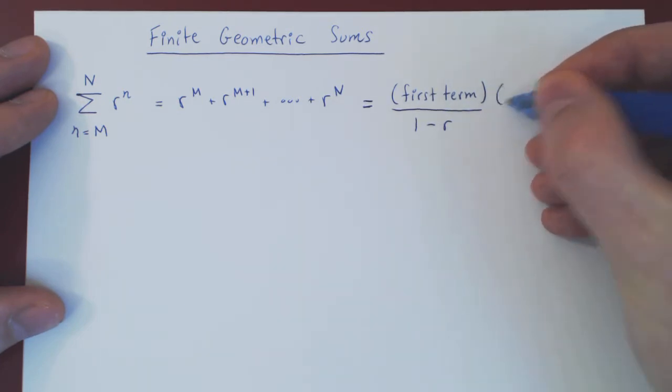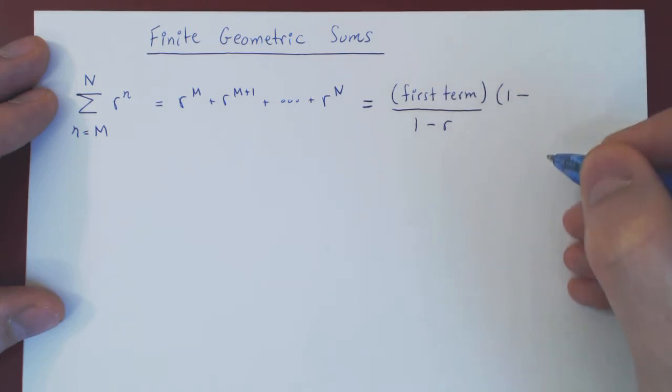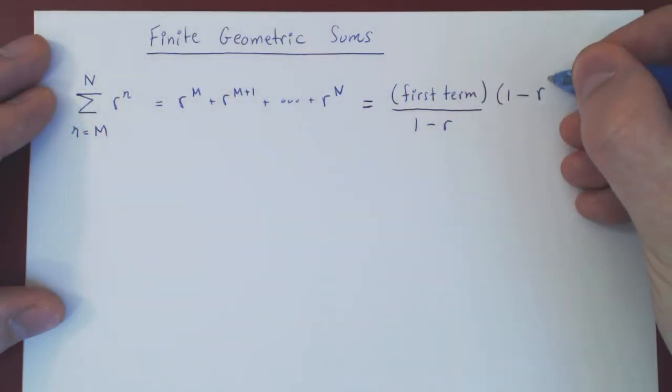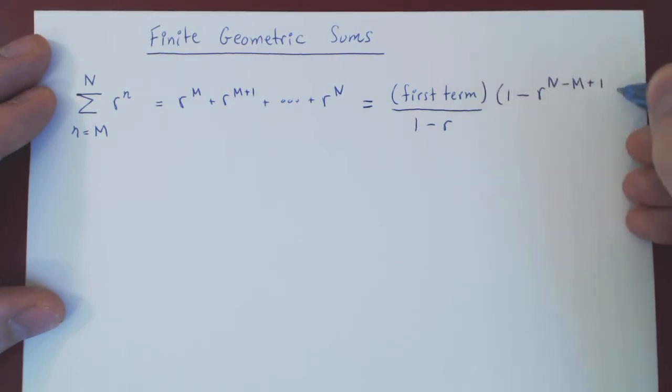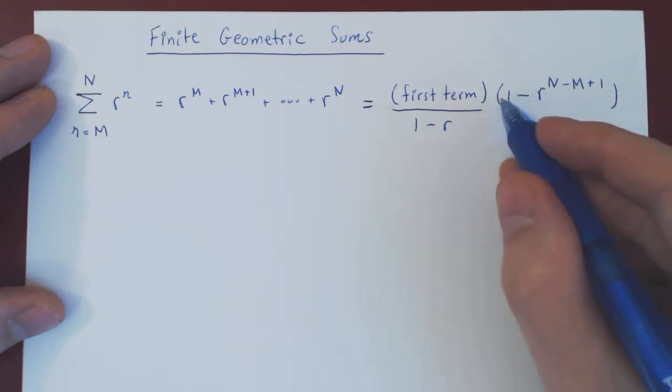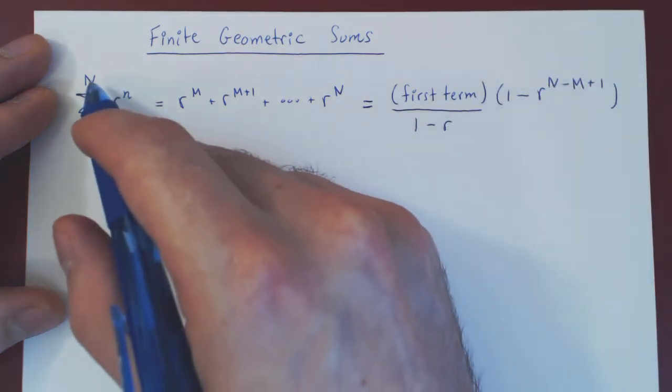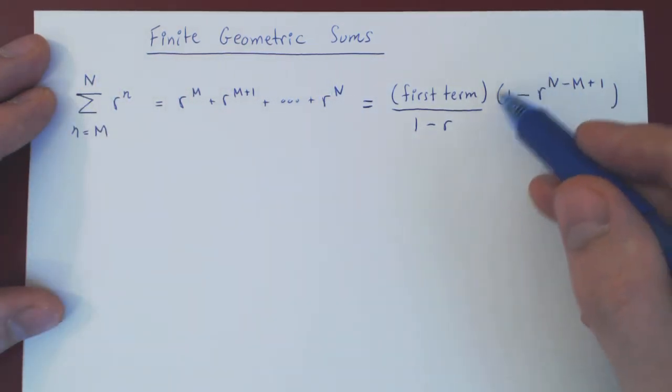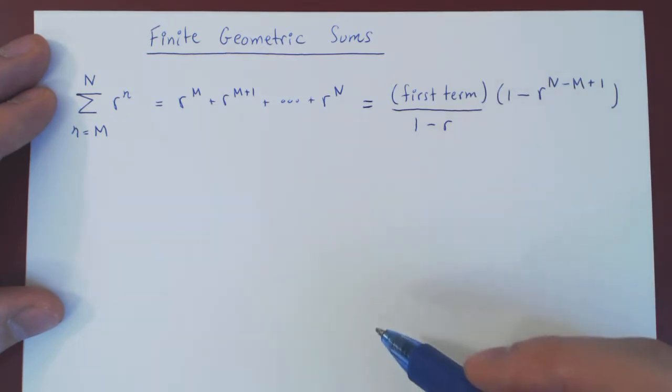So there is a correcting term here. And the missing term is the following: it is the first term times 1 minus r to the N minus M plus 1. And that's the correcting term. This is the only difference between a finite geometric sum and an infinite geometric series, in which case this simply goes away.